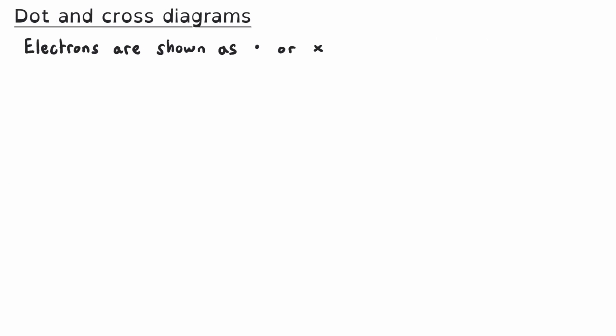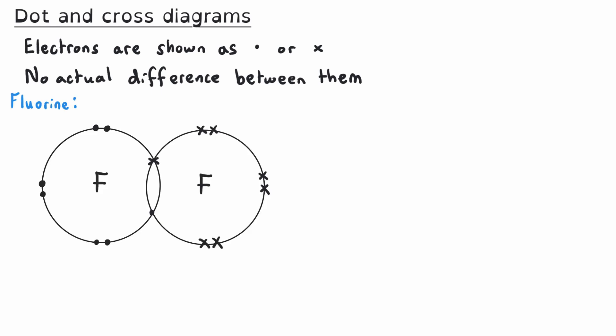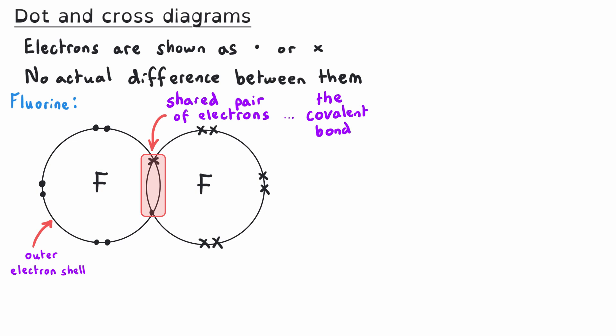We can use dot and cross diagrams to show the bonding in covalent substances. The electrons are shown as either dots or crosses — there is no actual difference between them; it's just used to indicate which atom originally owned the electrons. For example, in the dot and cross diagram for fluorine, the circles represent the outer electron shell of each fluorine atom. The fluorine atom on the left has its electrons shown as dots — seven dots, confirming it is in group 7. The other fluorine atom's electrons are shown as crosses — seven crosses. In the middle, the shared pair of electrons represents the covalent bond, and those two electrons belong to both fluorine atoms.